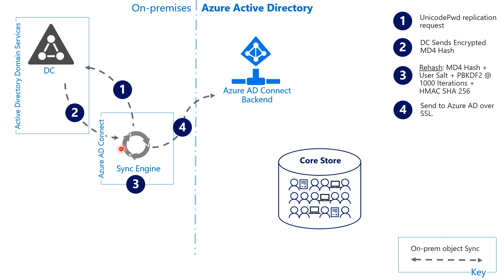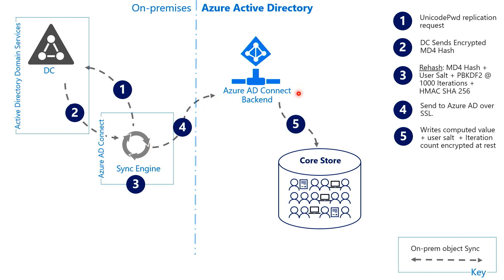In step four, the Azure AD Connect engine sends data to the cloud. When we say Azure AD, there are a lot of back-end components that enable different scenarios. Here we have a back-end service that talks to Azure AD Connect. The sync engine concatenates the 32-byte value, the per-user salt, and the number of iterations, and sends that new value over TLS to the back-end service. The Azure AD Connect back-end then saves the value it received in the core store in step five. The core store is designed to encrypt at rest the specific attribute that holds the credential, and the machines running this core store component are also protected with encryption using BitLocker.